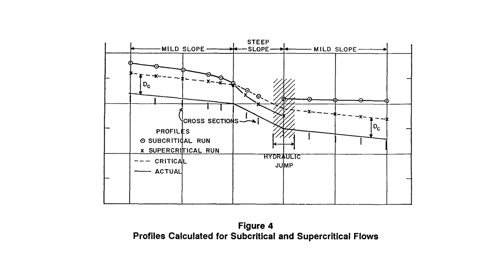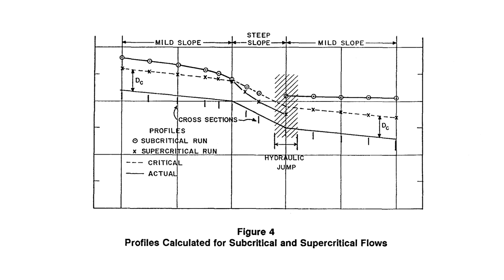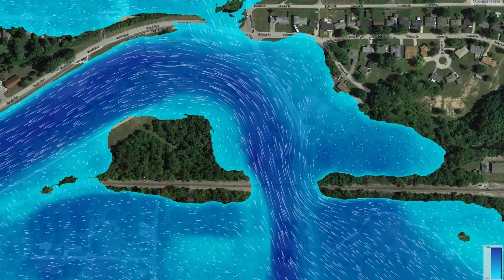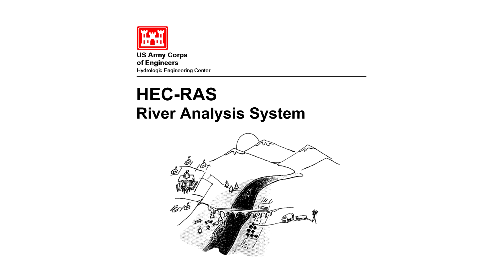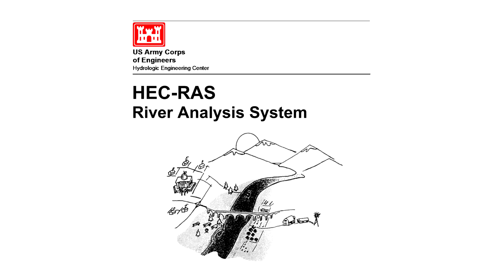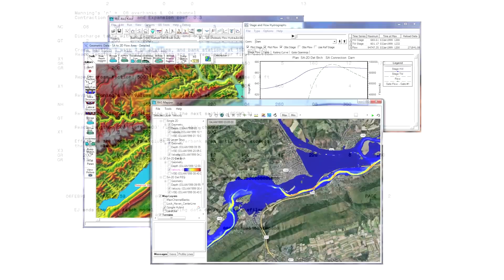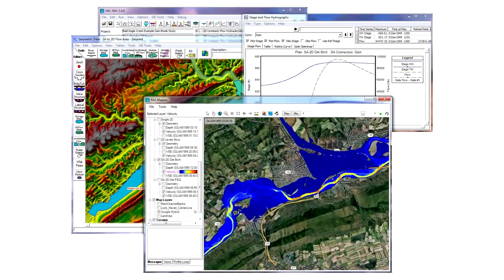There are a bunch of software packages available that can perform hydraulic computations along rivers, but one specific model is ubiquitous in the water resources engineering industry, at least in the US: the River Analysis System, or RAS for the cool kids. The reason for its popularity is simple — it's free. RAS is developed by the US Army Corps of Engineers, and our federal government sees fit to release it without charge.